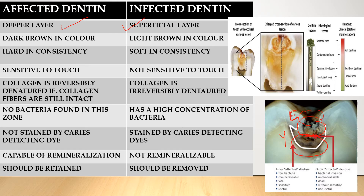The next difference is color. Affected dentine is dark brown in color, whereas infected dentine is light brown in color. You can see the color difference clearly here — dark brown for affected dentine and light brown for infected dentine.